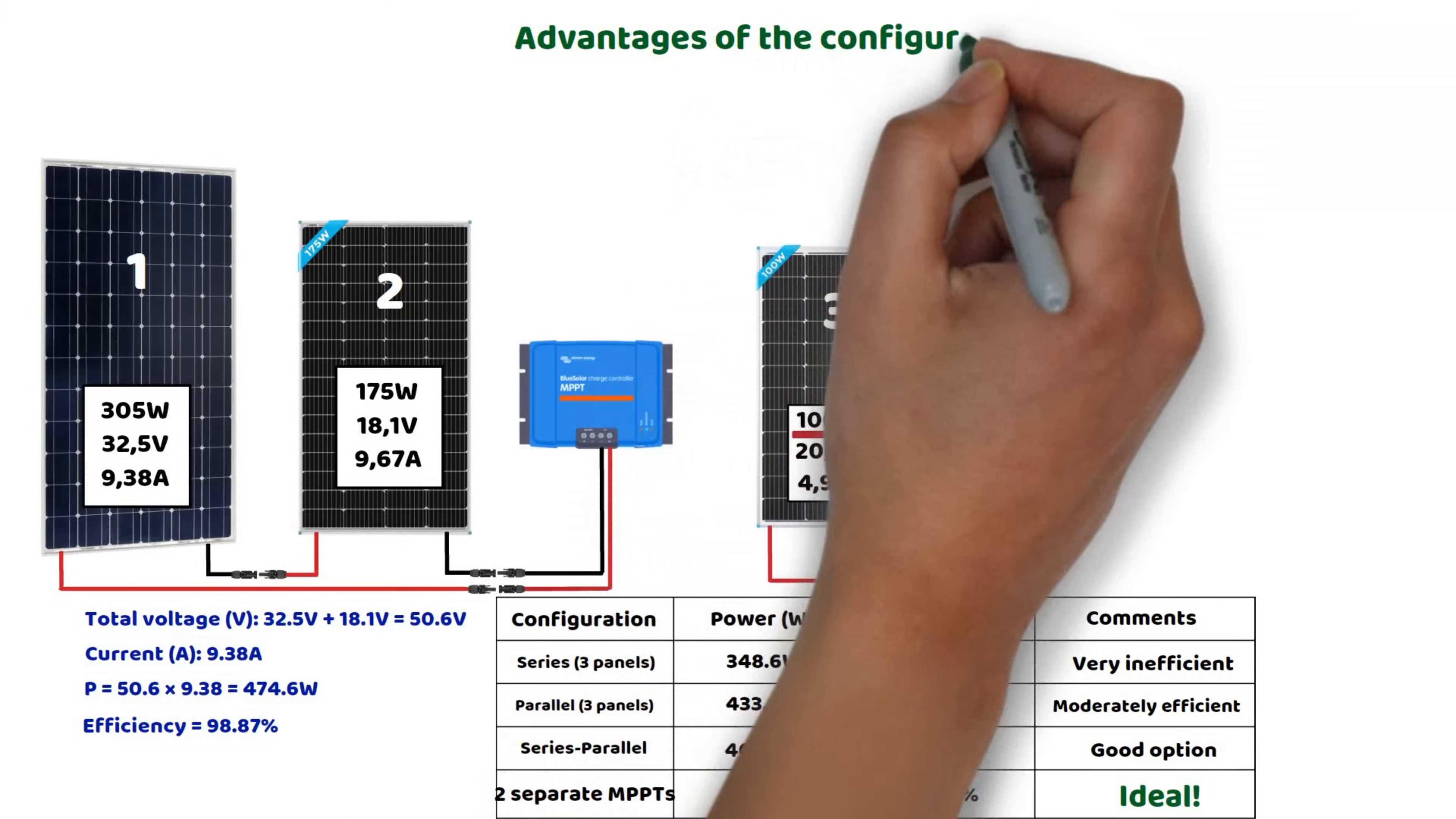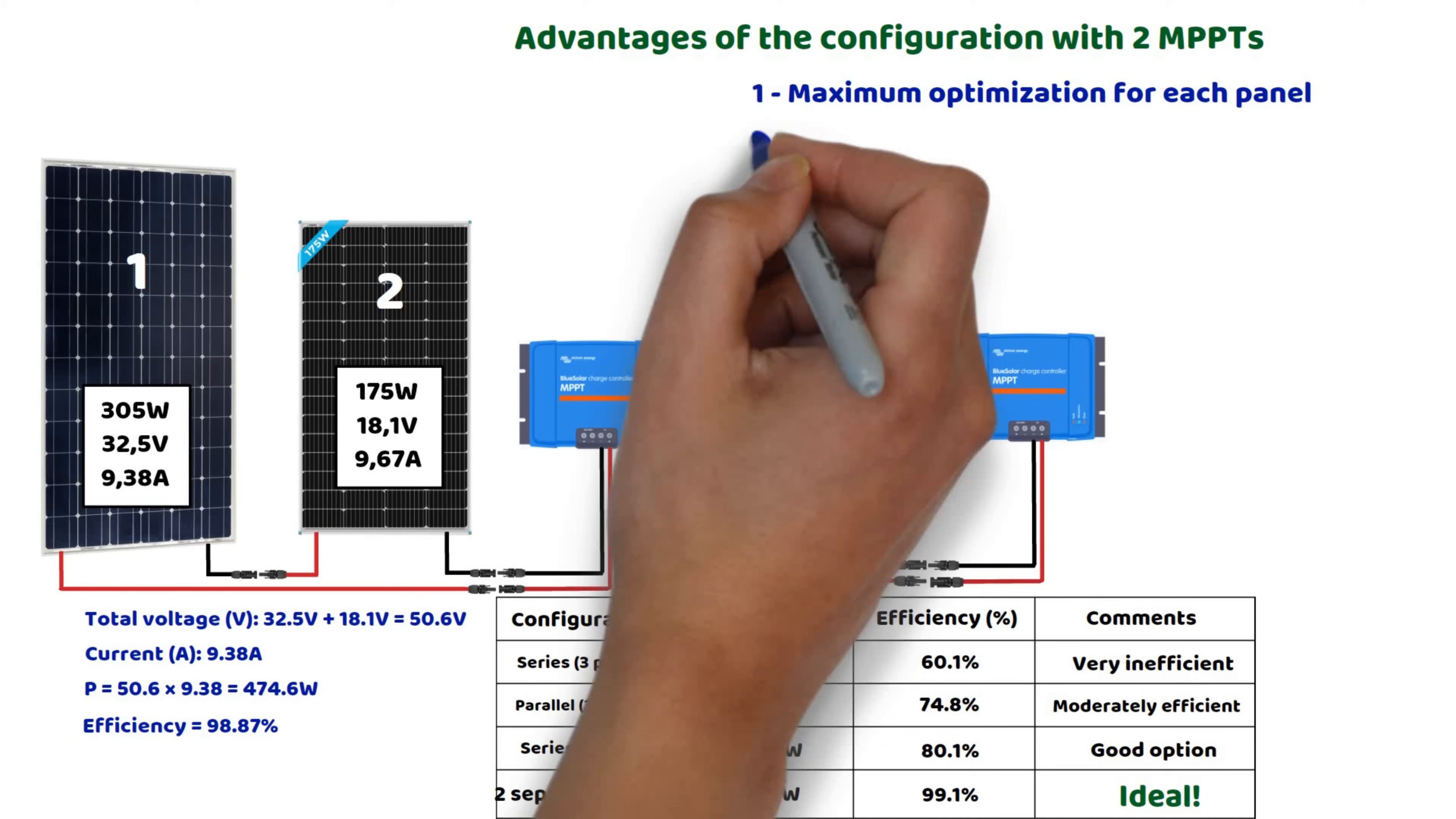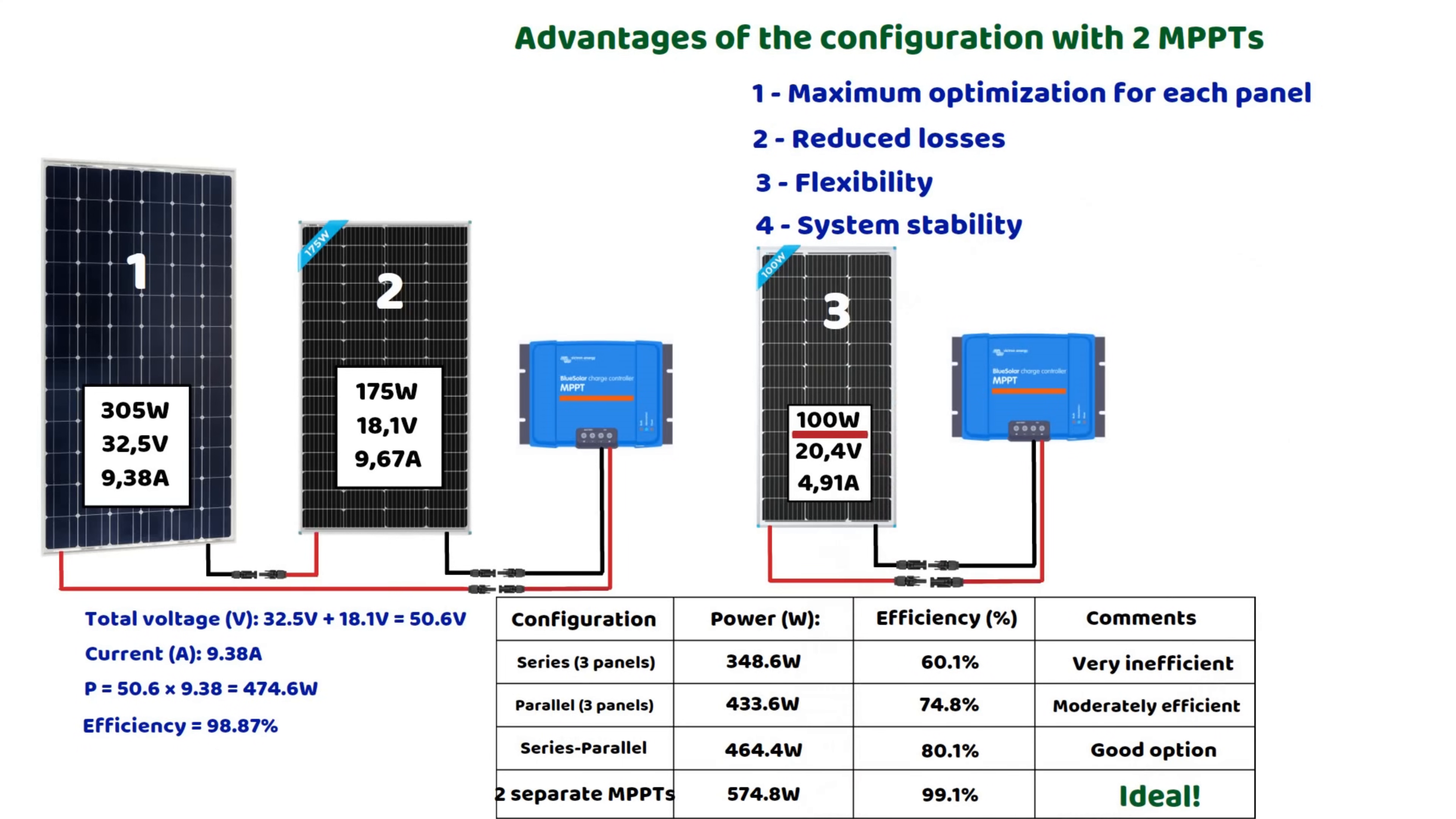Advantages of this configuration with two MPPT controllers. Each MPPT controller can operate at its maximum power point without being affected by differences in voltage and current. No limitations caused by the weakest panels. You can add similar panels to each controller later on. Each controller manages an optimized input, avoiding energy imbalances. For more information, check the description of this video. Don't forget to subscribe to the channel, leave a like, and once again, feel free to ask your questions in the comments.